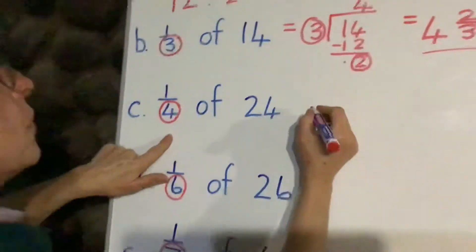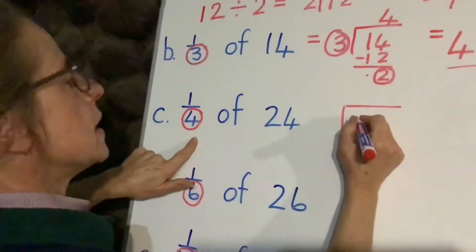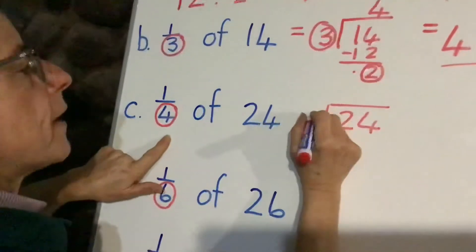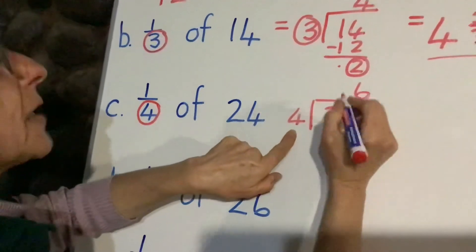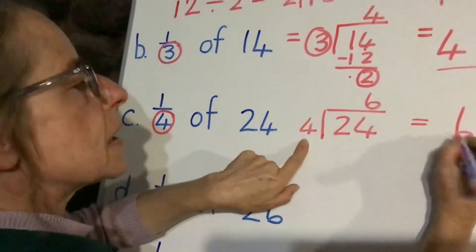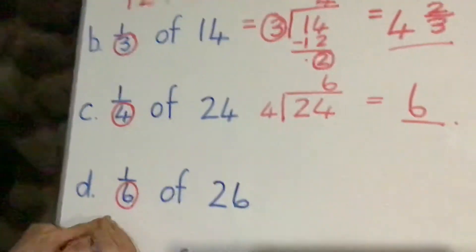Next one here, we've got 24 divided by 4. Now that one we know is going to work out nicely, so it's just going to be 6. So our answer will then be 6 packets.